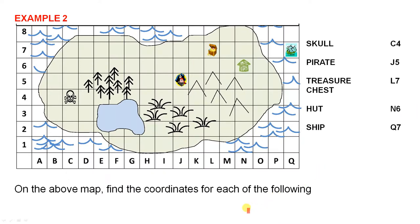On the above map find the coordinates for each of the following. So the coordinates mean you do a letter first and then you do a number. The first one is the skull. So let's look where the skull is. There it is there. So I'll leave this red mark near the skull. See there? In fact I'll put a little red mark there. That'll tell us what we're focusing on. So we start at the beginning, we go across first. So it's C4.